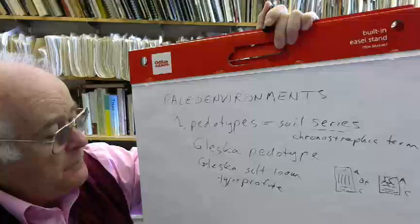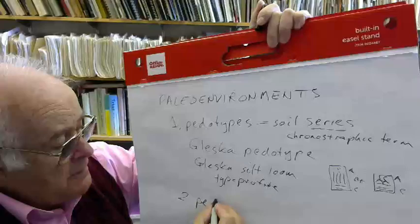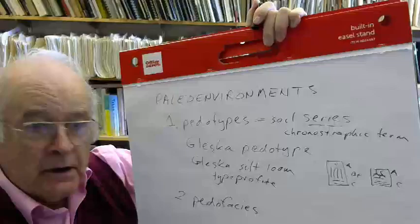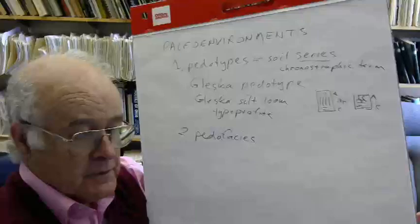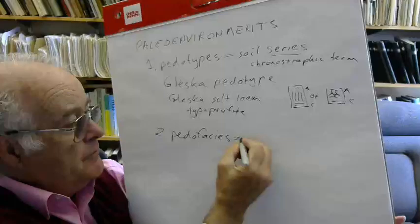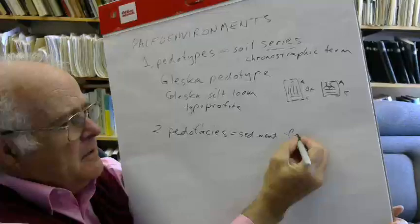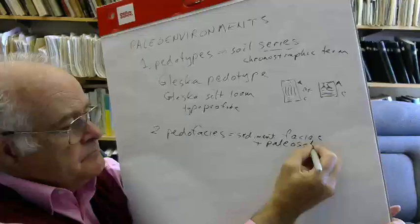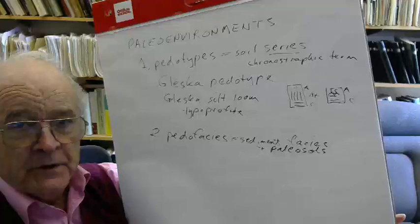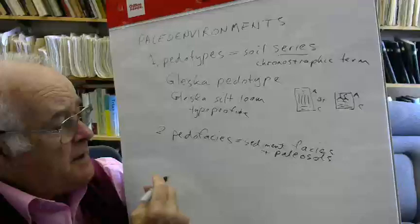So we've always excavated one particular example and then gone to town on it, sampled it, got geochemistry, got grain size, got all the details we can on it. And that's the reference one. You just go back to that profile. If you have another one that you want to compare with, is it the same or is it different? And so you build up often a fairly complicated pedotype terminology.